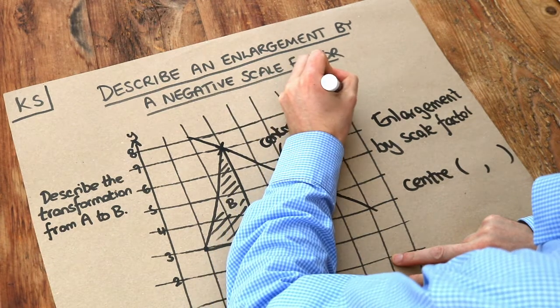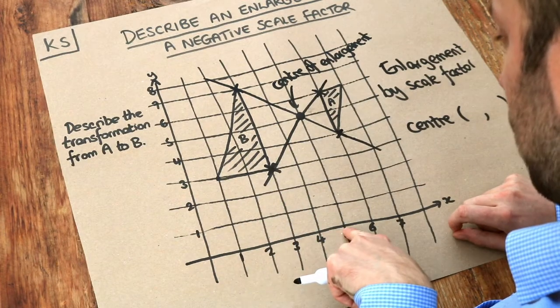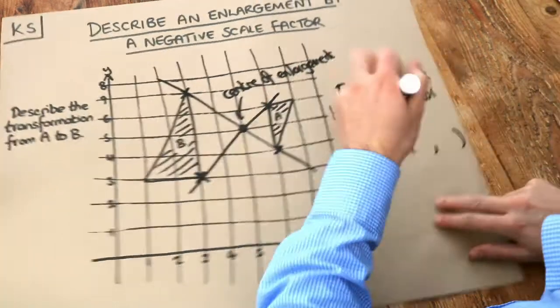Let's read off the coordinate of that and then we'll worry about our scale factor. Across the x-axis we've got 5, up the y-axis we've got 5. It's 5, 5.